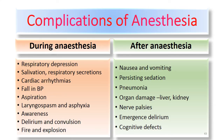There are two stages of complications of anesthesia. During anesthesia: respiratory depression, increased salivation and respiratory secretions, cardiac arrhythmia, fall in blood pressure, aspiration, laryngospasm and asphyxia, awareness, delirium and convulsions, and fire and explosion when general anesthesia is used. After anesthesia: nausea and vomiting, persisting sedation, pneumonia, organ damage such as liver and kidney damage, nerve palsies, emergence delirium, and cognitive defects.